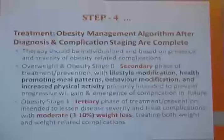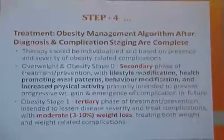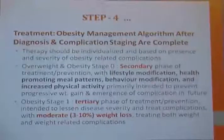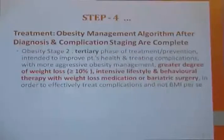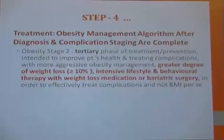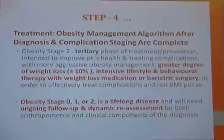In stage four, treatment and intervention are selected according to the management algorithm after diagnosis and complication staging are complete. Therapy should be individualized. For overweight and obesity stage zero, secondary-level care and prevention with lifestyle modification, health-promoting meal patterns, behavior modification, and increased physical activity are recommended. In obesity stage one, moderate weight loss of 3–10% is targeted, treating both weight and weight-related complications. In stage two, tertiary-level care targets more than 10% weight loss with intensive lifestyle therapy, weight loss medication, and bariatric surgery to treat complications effectively. Obesity stage zero, one, and two are lifelong conditions requiring ongoing follow-up and dynamic reassessment.